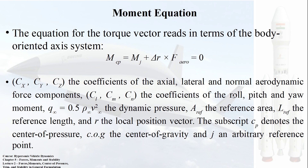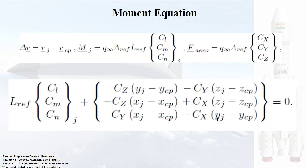The equation of the torque vector reads in terms of the body-oriented axis system. The moment about the center of pressure equals the moment about point J plus the aerodynamic force acting at the CP position multiplied by delta_r, where delta_r is the difference r_J minus r_cp. The sum equals zero. Capital letters indicate coefficients of axial, lateral, and normal aerodynamic forces; small letters l, m, n indicate coefficients of roll, pitch, and yaw moments. The dynamic pressure q_infinity is given as (1/2)rho*v^2; A_ref is the reference area; L_ref is the reference length.